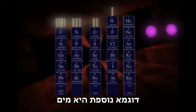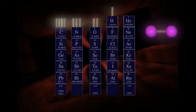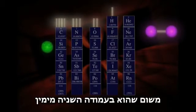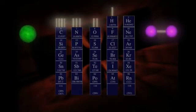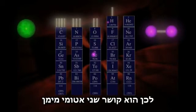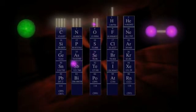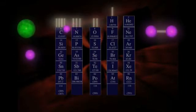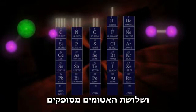Another example is water. We can see that oxygen wants to make two bonds, because it is in the second column from the right. So it can get together with two hydrogen atoms, which each want to make one bond, and all three atoms are happy.